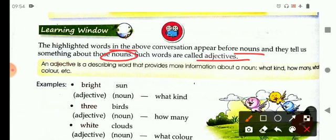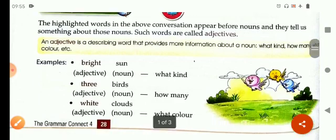Adjectives are describing words. An adjective is a describing word that provides more information about a noun, what kind, how many, what color, etc. Now let's see in examples.